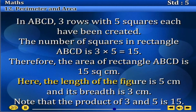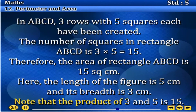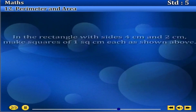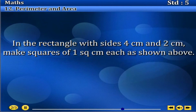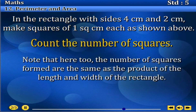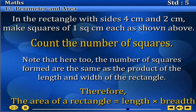Here, the length of the figure is 5 cm and its breadth is 3 cm. Note that the product of 3 and 5 is 15. In the rectangle with sides of 4 cm and 2 cm, make squares of 1 cm² each as shown above. Count the number of squares — note that here too, the number of squares formed are the same as the product of the length and width of the rectangle. Therefore, the area of a rectangle equals length into breadth.